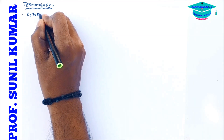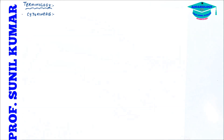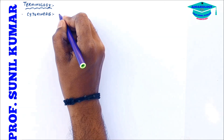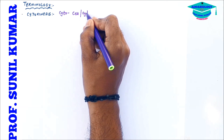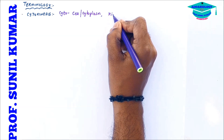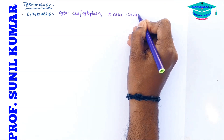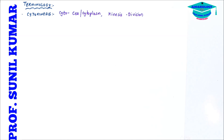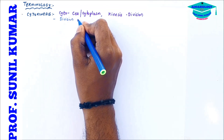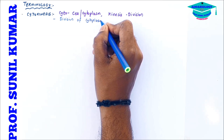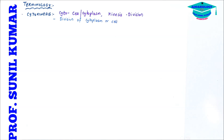Before starting cell division, let us understand some key terminologies. First is cytokinesis. The word 'cyto' means cell or cytoplasm, and 'kinesis' means division. So cytokinesis is defined as the division of the cytoplasm or the cell.